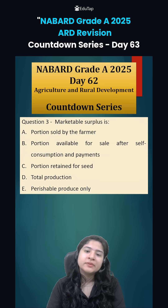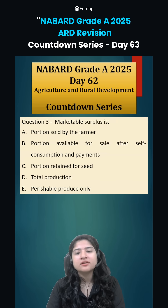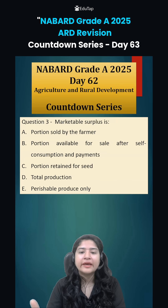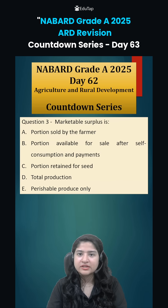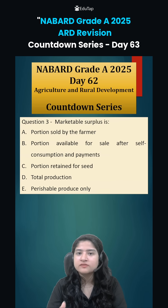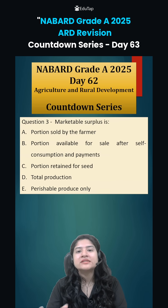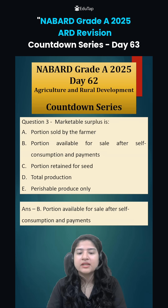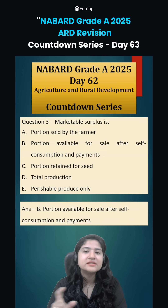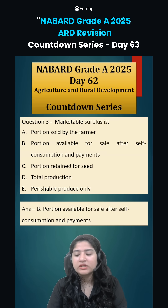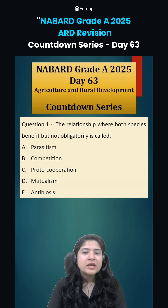Coming to question number three: marketable surplus. Marketable surplus basically means that once the farmer has harvested the produce, some he keeps for himself and his family. Whatever is left for sale is known as marketable surplus — that is, the portion available for sale after self-consumption and whatever payments needed to be done.